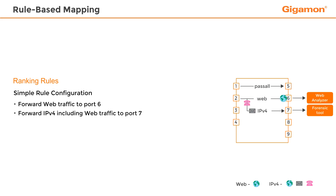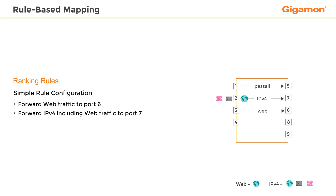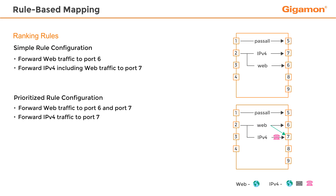Using the left rule order, web traffic is delivered to the web traffic analyzer, but the traffic reaching the forensic tool does not include any web traffic. The more specific rule was matched, and packets were delivered to port 6. If the rule order is used from the right side, then the less specific rule for IPv4 traffic delivers that traffic to port 7. Since web traffic is also carried by IPv4, none of the web packets reach the web analyzer on port 6.